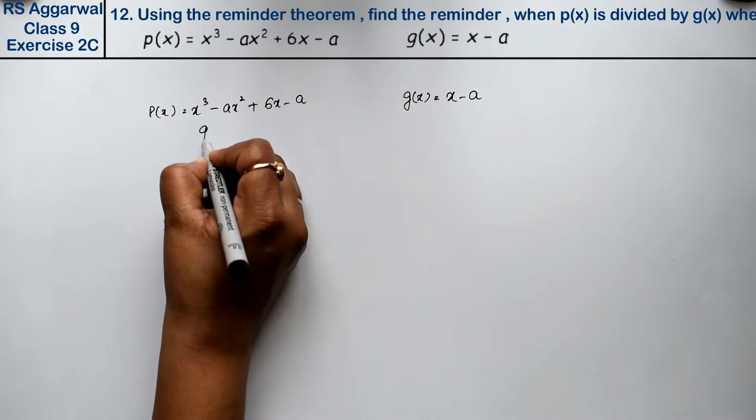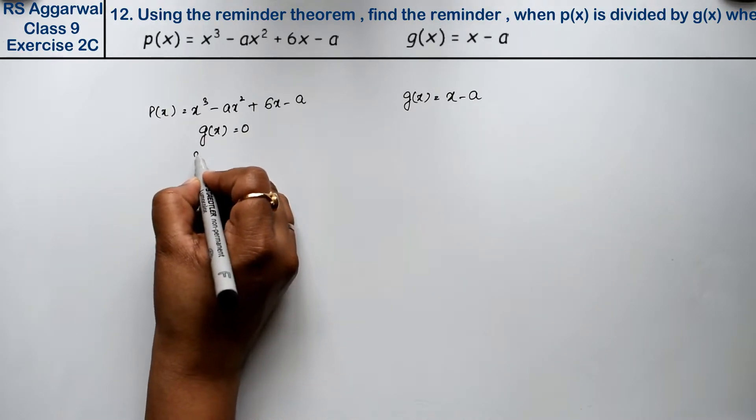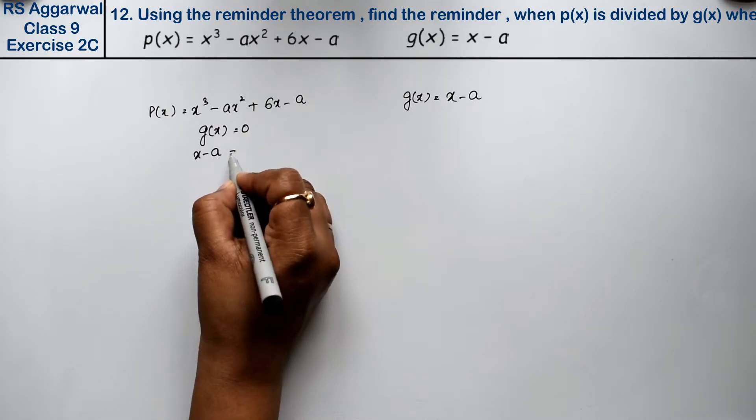So now, what do we write? g(x). We write zero, according to the remainder theorem. So g(x) was how much? x minus a equals to 0.